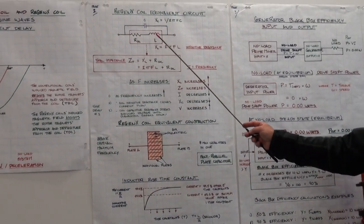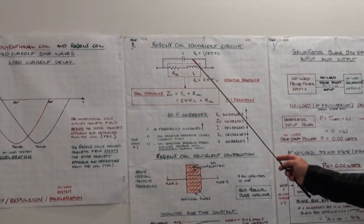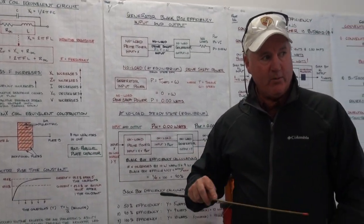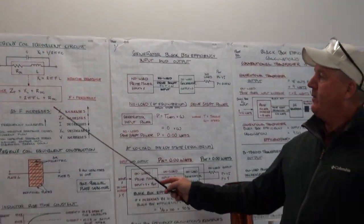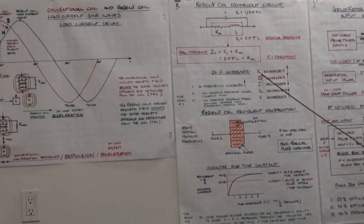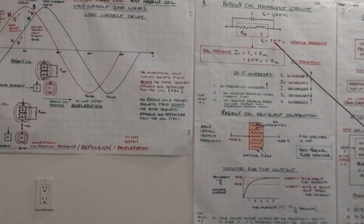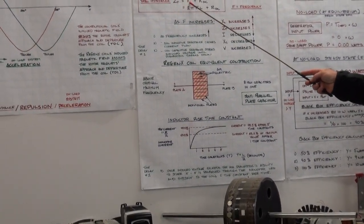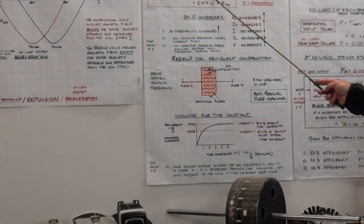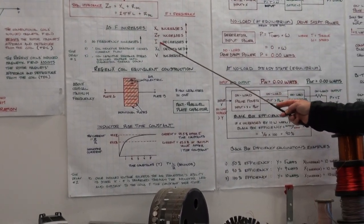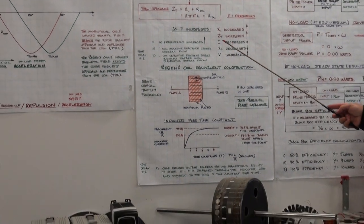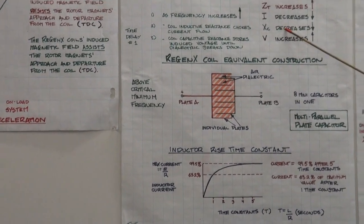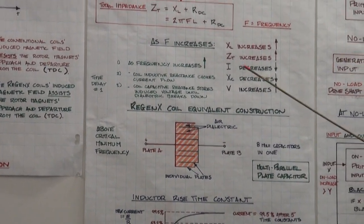At lower frequencies, a coil operates as an inductor and stores energy in the electromagnetic field around the coil. As frequency increases, the inductive reactance increases because it's a function of frequency. The total impedance of the coil increases — inductive reactance plus DC resistance — and therefore the current in the coil decreases.